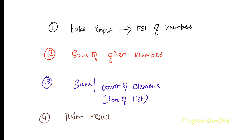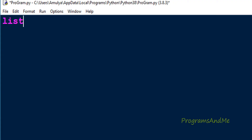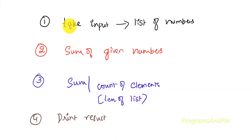First let's do step one — we need to take the input. You can take the input in two ways: you can directly define a list, or you can take user input. First we will take a list directly, so I will define list1 with elements 10, 20, 30, and 40. We are done with the first step.